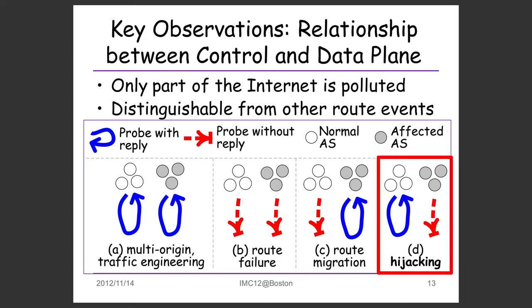In case A, probing from both the normal AS and an affected AS to the target succeeds — everything is working as it should, probably just traffic engineering. In case B, probes from both the normal and affected AS fail — this indicates route failure, not a malicious event. In case C, only the affected AS can reach the destination, suggesting route migration or a backup link being enabled. In case D, normal ASs can still reach the destination but affected ASs cannot — this is a sign that the new advertisement with the new origin is black-holing the traffic.